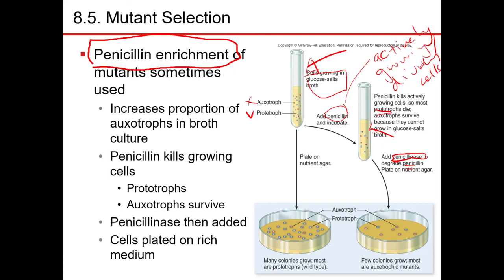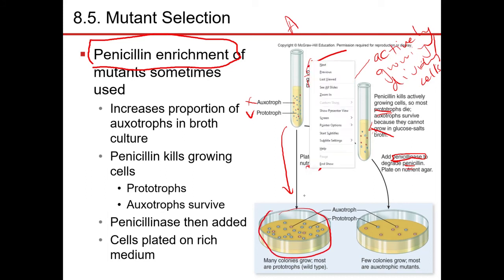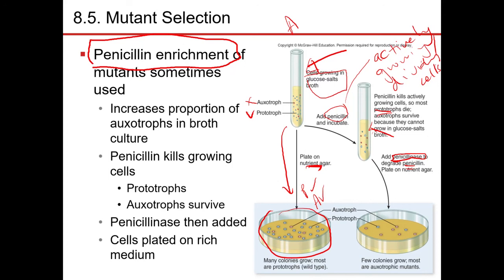For that purpose, penicillinase must be added to stop the function of penicillin after a sufficient amount of time. If you take a sample from the tube before penicillin was added and plate it on nutrient agar, you would see lots of colonies — both prototrophs and auxotrophs would grow. But after penicillin enrichment, the antibiotic gets rid of the prototrophs and increases the numbers of auxotrophs, so the ratio has shifted — you now have more auxotrophs than prototrophs.